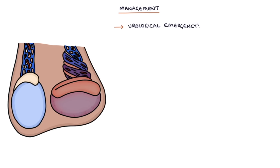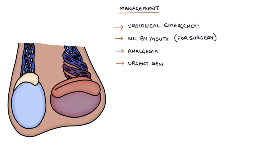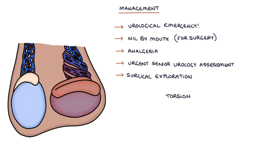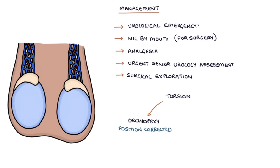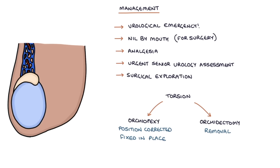The management of testicular torsion involves making the patient nil by mouth in preparation for surgery, analgesia as required, and urgent senior urology assessment. This is followed by surgical exploration of the scrotum. If testicular torsion is found during surgical exploration, there are two ways to manage it surgically: either orchiopexy, where the position of the testicles is corrected and the testicles are fixed in place, or orchidectomy, which is removal of the testicle, used if there's a delay in surgery or there's necrosis to the testicle.